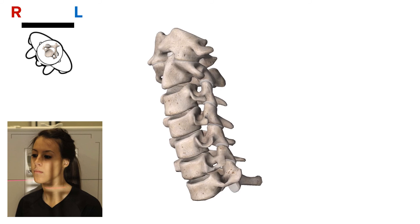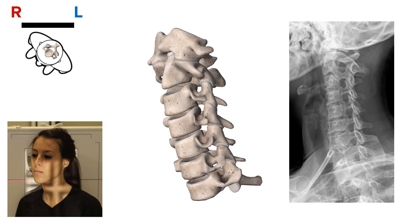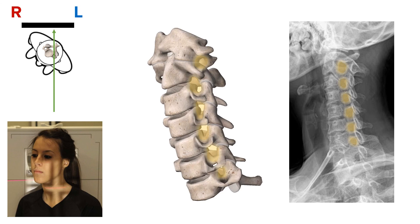And here we see the intervertebral foramen. Look at the x-ray image of an RPO C-spine — you can see all of the left intervertebral foramen on the C-spine. Remember that in all RPO spine positions, the spinous process will face the left side of the cassette and the left intervertebral foramen will be open.